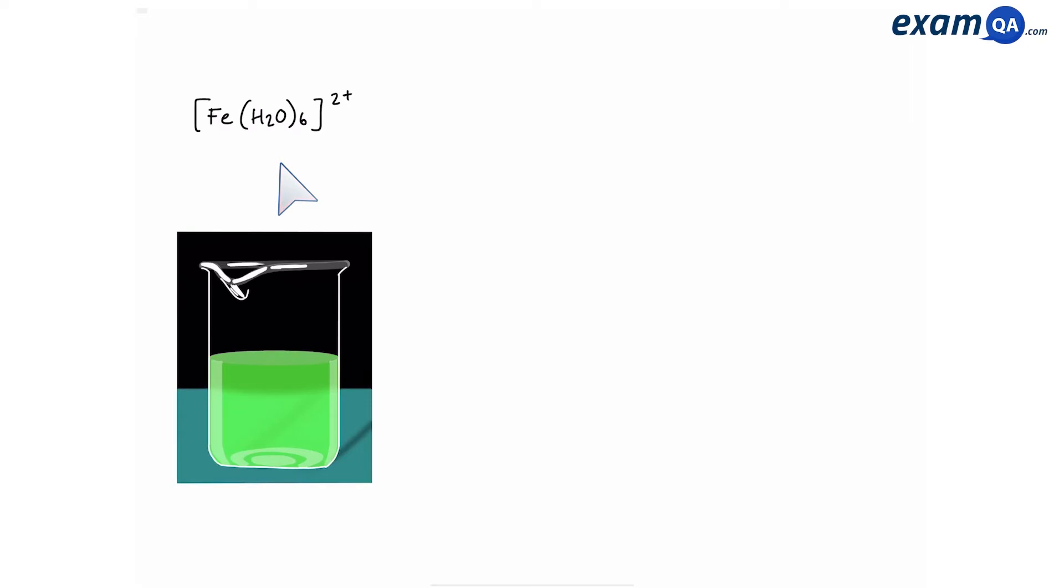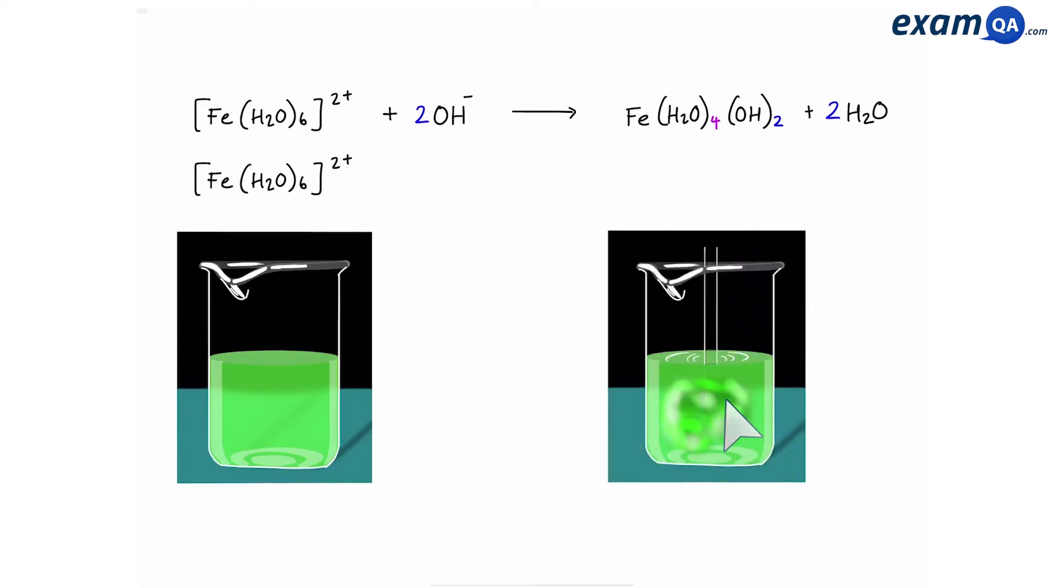Iron 2+ has a green solution. When you react it with hydroxide, it's going to form a green precipitate. If you react it with ammonia, it's going to form the same green precipitate. In both scenarios, the green precipitate over time becomes slightly brown. So make sure you remember that characteristic change for this ion compound.